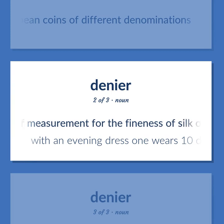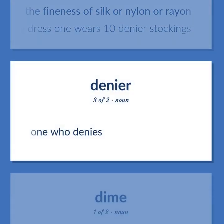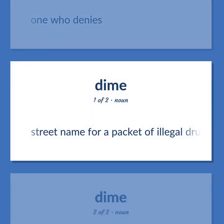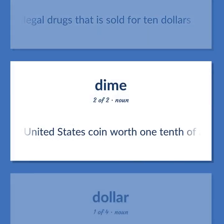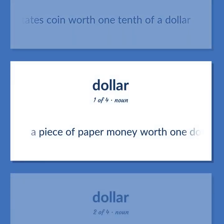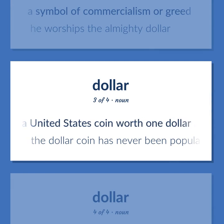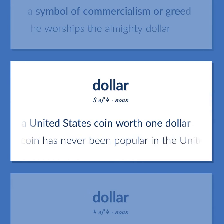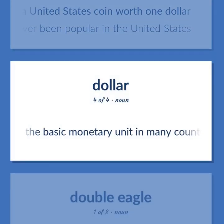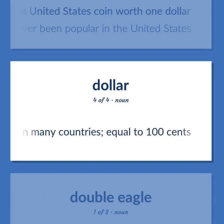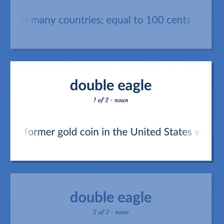Denier: A unit of measurement for the fineness of silk, nylon, or rayon — with an evening dress one wears ten denier stockings. One who denies. Street name for a packet of illegal drugs sold for $10. Dime: A United States coin worth one tenth of a dollar. Dollar: A piece of paper money worth $1. A symbol of commercialism or greed — he worships the almighty dollar. A United States coin worth $1 — the dollar coin has never been popular in the United States. The basic monetary unit in many countries, equal to 100 cents. A former gold coin in the United States worth $20.